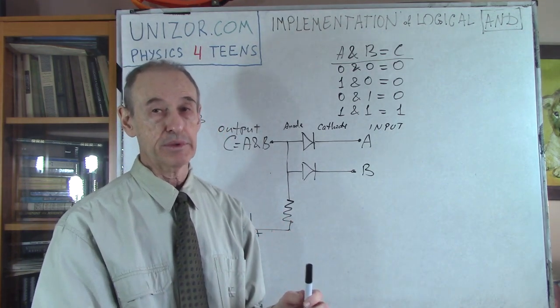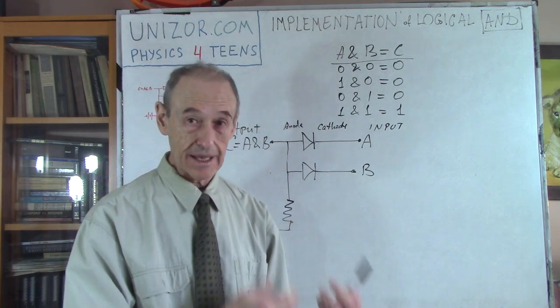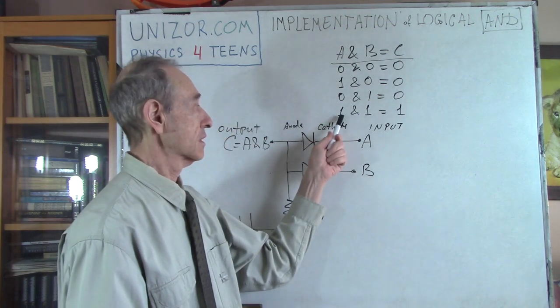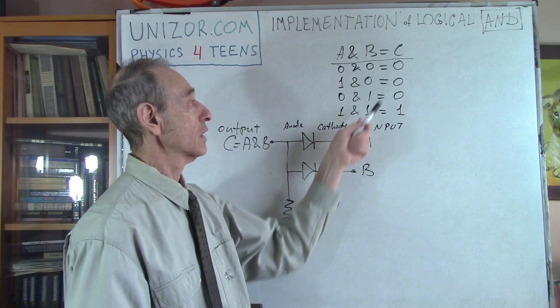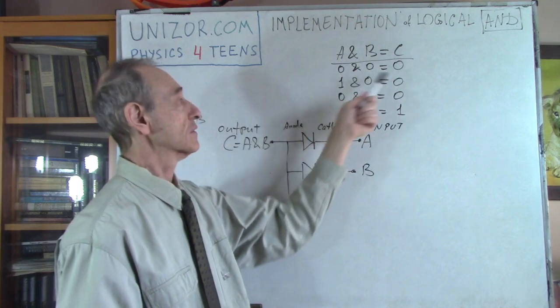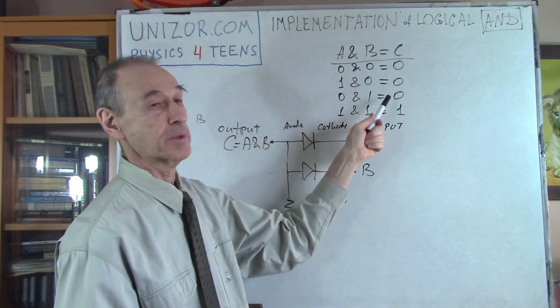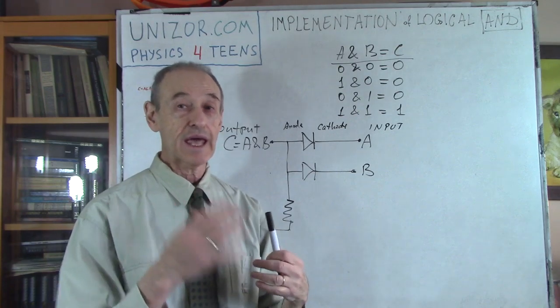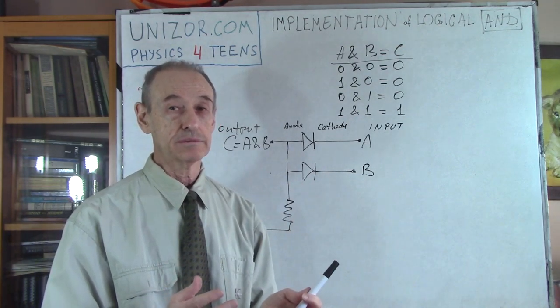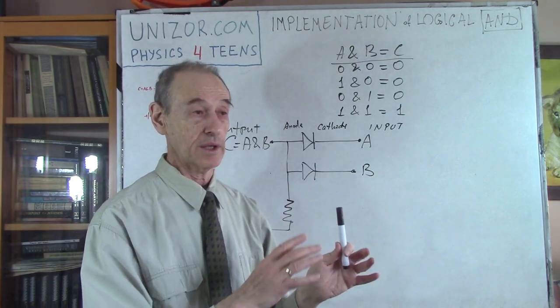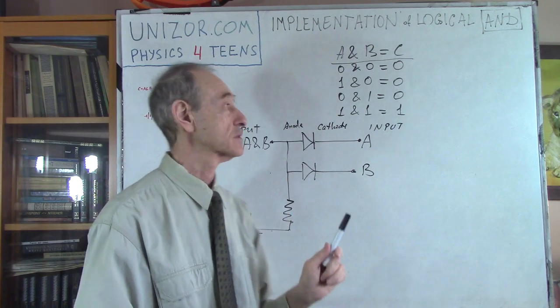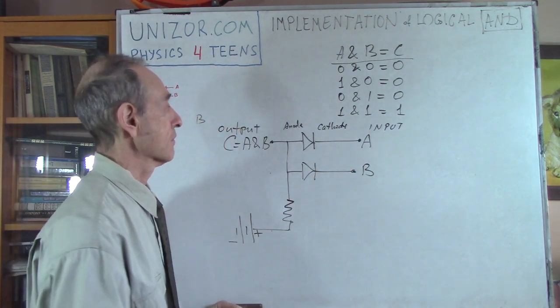This one is about AND. So A and B happened means A happened and B happened. So A is one and B is one. All other cases when none of them is happening or one of them is happening, it means that A and B did not happen. Only if both of them happened. That's the rules of conjunction.